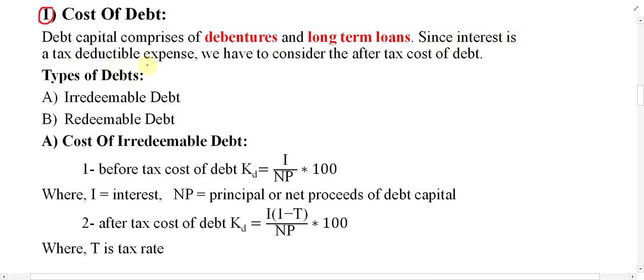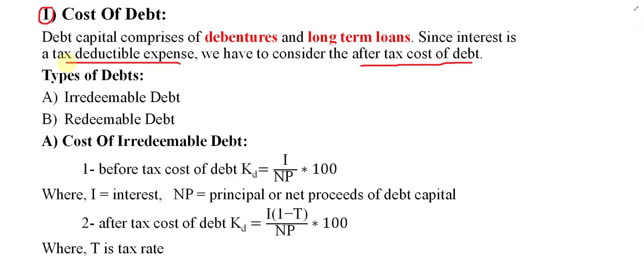Since interest is a tax-deductible expense, we have to consider the after-tax cost of debt. It is called a tax-deductible expense because first we charge the interest on the income statement, and then on the residual value we pay tax to the government. That is why this is called a tax-deductible expense.